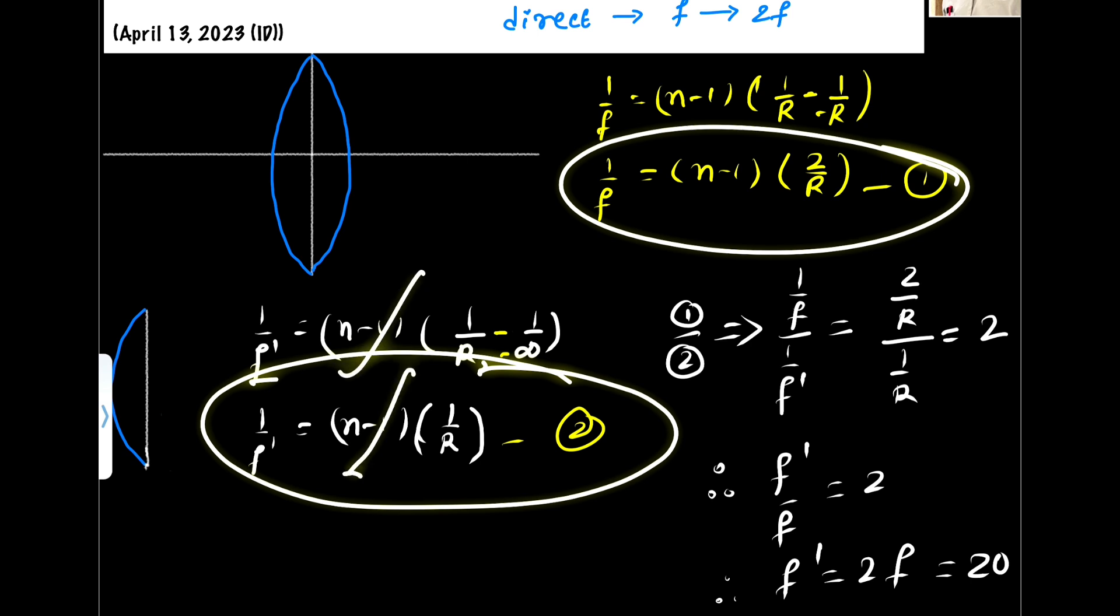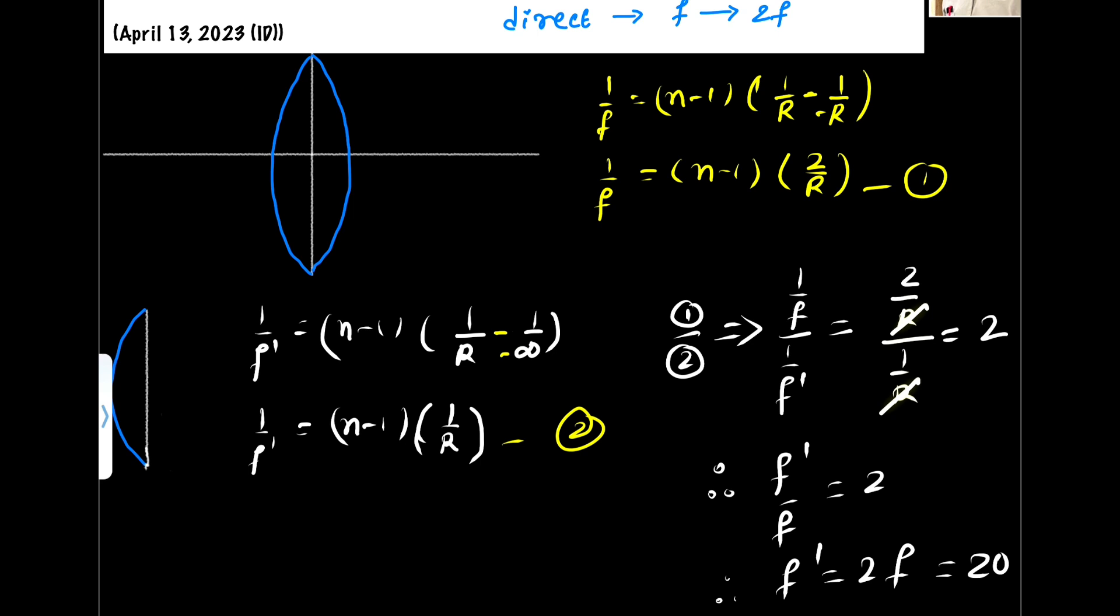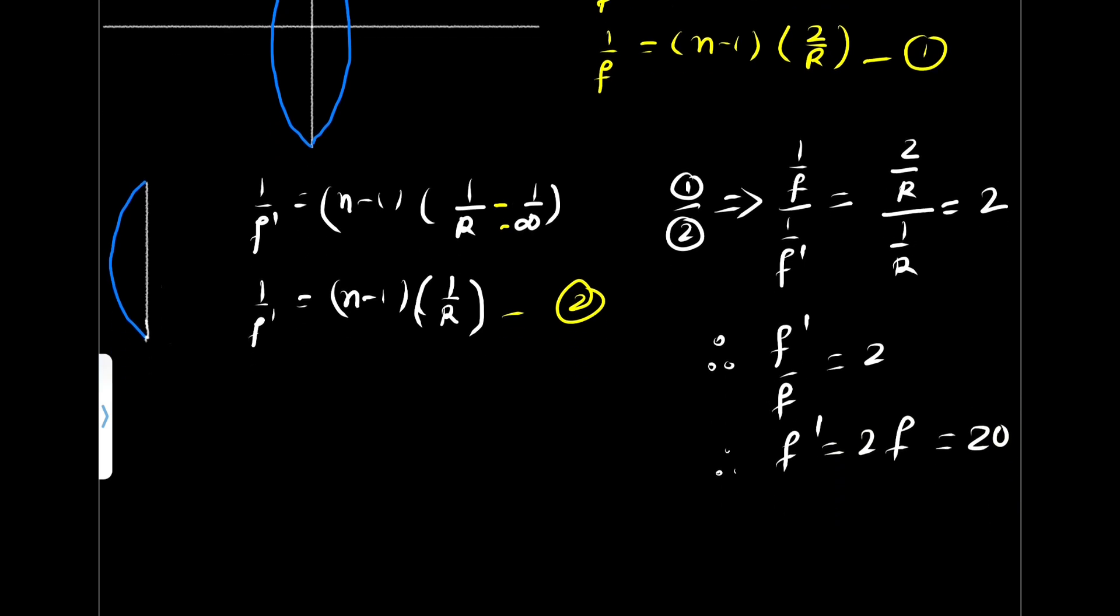So 2 by r by 1 by r, so r and r will get cancel. It means f dash by f equals 2, so f dash equals 2f. Means the new focal length is 20 centimeter.